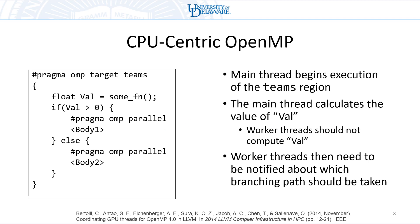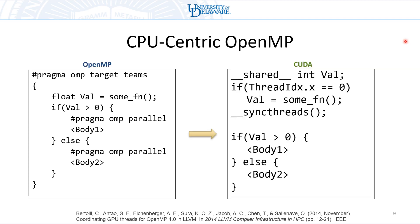If we think about how we would implement this in CUDA, this case is actually not very difficult. We could put the value returned into shared memory so all the threads on the thread block can access it. We can guard that call to the function behind an if-check to make sure it's thread ID zero, so only a single thread encounters this function, and we synchronize afterwards to make sure all threads read the correct value of val before determining the branch. This is a pretty simple solution in CUDA, though if we have nested if-else structures or more nesting inside different functions it could become much more complicated.